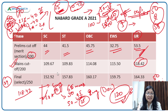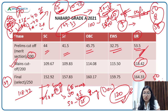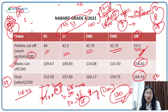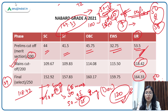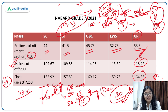Now looking at the final cutoff for the final selection — in the unreserved category it was 164.33, and this was out of 250. So if you look at the final cutoff, you have to get 164.33. The cutoff may be slightly higher than last year by 5 to 10 marks, but percentage-wise it is comparable and almost the same.